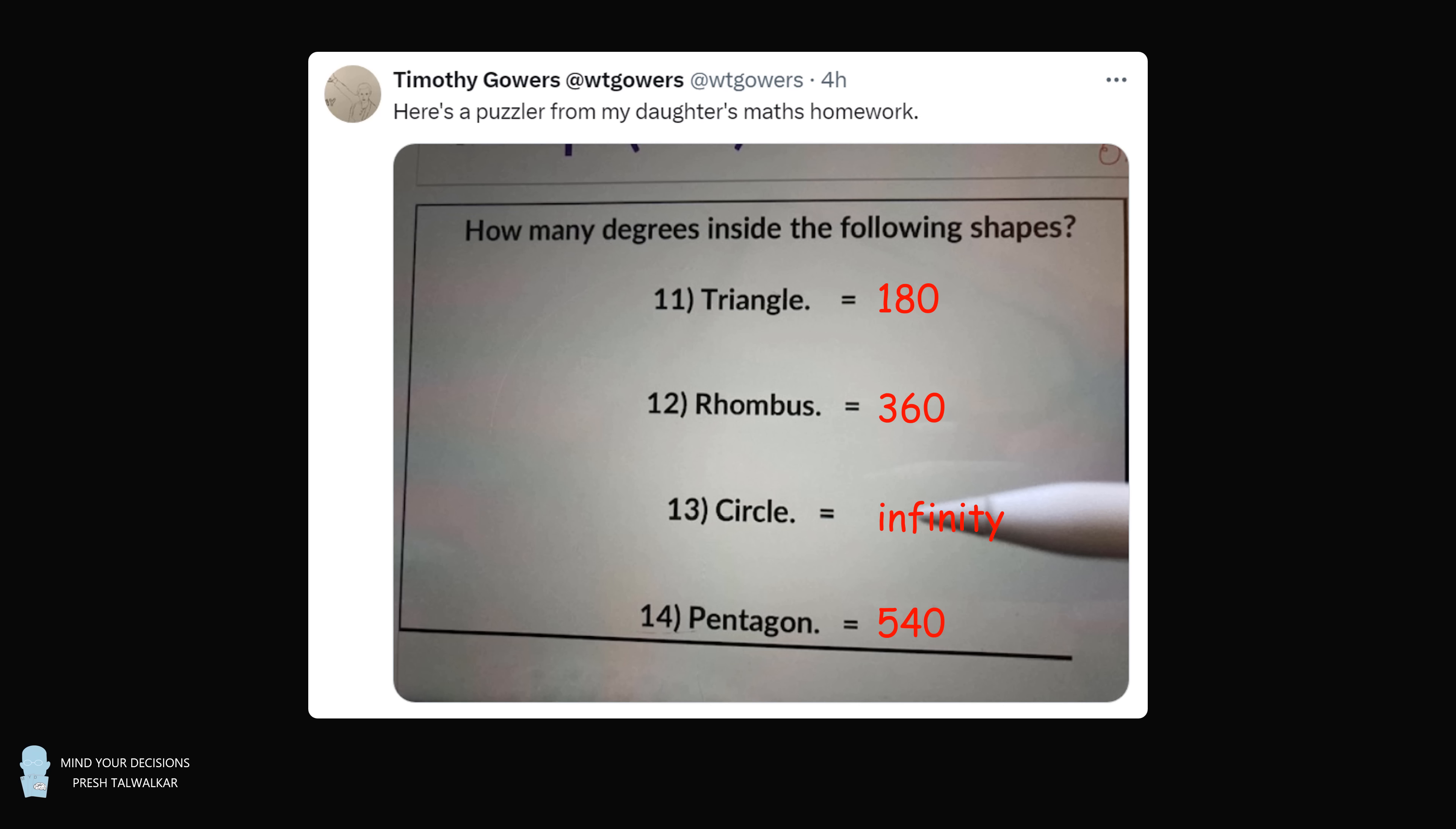So to understand where this answer of infinity comes from, let's take a step back. The measure of a straight line is 180 degrees. What is the sum of the interior angles of a triangle? We will solve this problem with a clever construction that's been known since ancient times. Construct a line that goes through the bottom side of the triangle. According to the postulates of Euclidean plane geometry, we can then construct a unique parallel line that goes through the top point of this triangle.